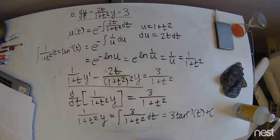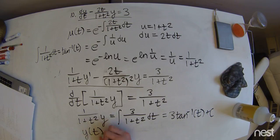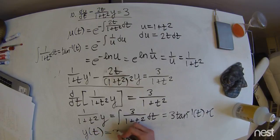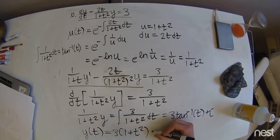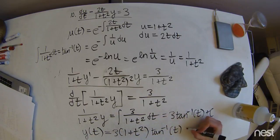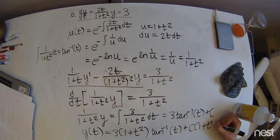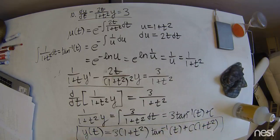Multiplying over the 1 over 1 plus t squared, we get our final solution: y of t equals 3 times 1 plus t squared times arctan(t), plus c times 1 plus t squared. And that is our solution.